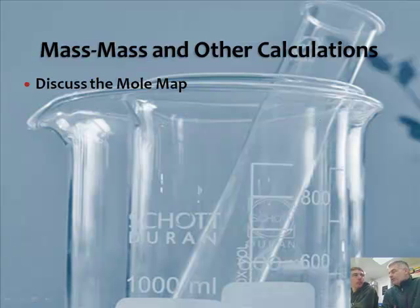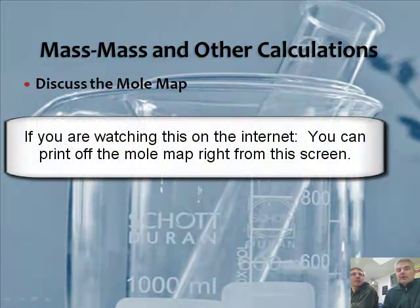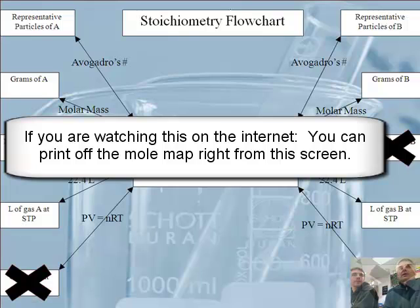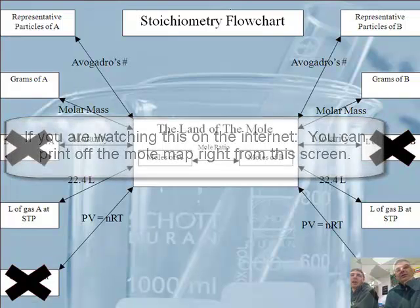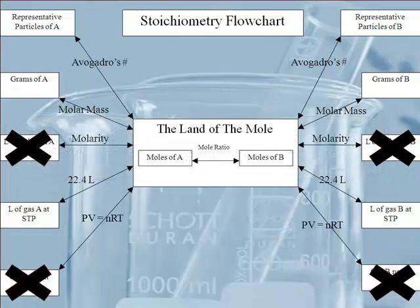So now that we have kind of figured out the whole ratio thing, I think we need to discuss what was called the mole map, so it helps us to understand how to do these calculations. And if you look in your packet, the mole map is in your packet. It's page three or four or something like that. And if you're watching this on the internet, as some of you I know are, your teacher or whoever bought the CD or the DVD can get access to that on the DVD. So this is called the stoichiometry flowchart, or sometimes we like to say the land of the mole.